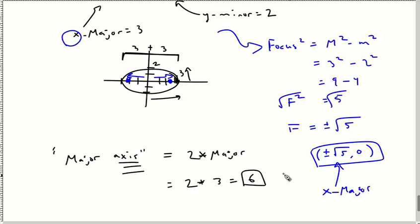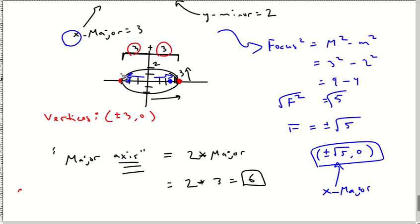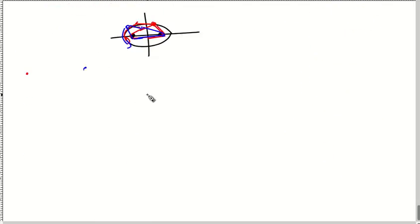Some other words they might use are 'vertices.' A vertex or vertices are the endpoints on the majors. In this particular case, the vertices are plus or minus three, comma zero — you're simply going out three distance to the edge. It might seem like there's a lot going on, but in the end it really is not too bad.